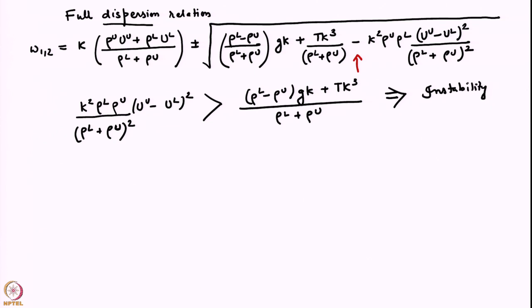This is a different form of instability compared to what we have seen. This instability requires a velocity difference (U_U − U_L)². Note that the instability depends only on the difference of the two velocities — not on their absolute values — and because it is the square of the difference, it does not even matter whether the flow goes from left to right or right to left; the sign does not matter.